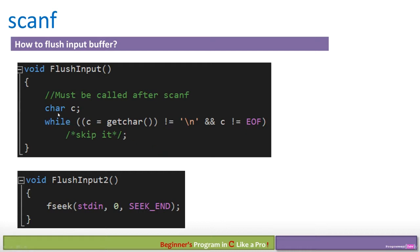The first technique defines a char c and uses a while loop that reads one character at a time from the input stream. As long as the character is not a newline and we don't encounter end-of-file, we keep skipping that value. This extracts all remaining values in the input buffer stream until there's no more data. Call this function right before your scanf call. However, don't use it if scanf hasn't been called before, because getchar will prompt the user if the buffer is empty.